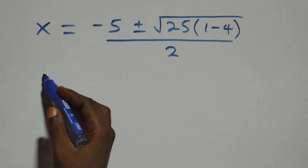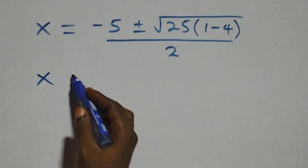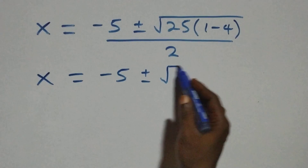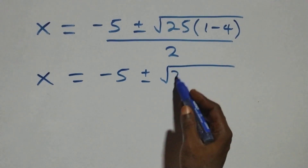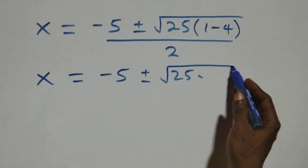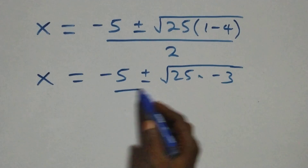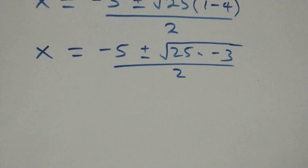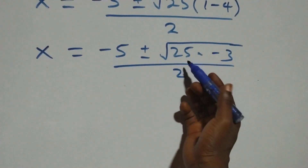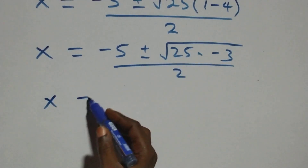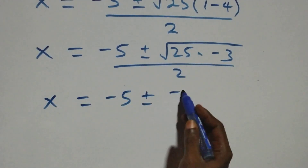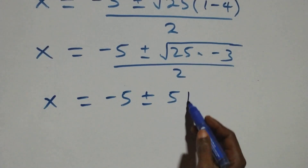Next step: x equals to minus 5 plus or minus square root of 25 times 1 minus 4, that's minus 3, over 2. Taking out the square root of 25, that's 5, we have x equals to minus 5 plus or minus 5 times root of minus 3.